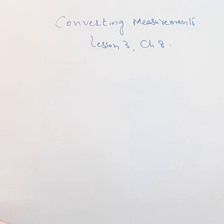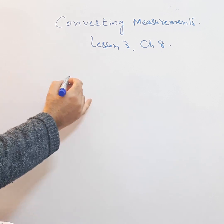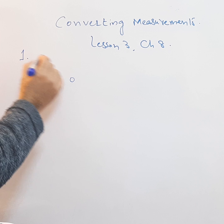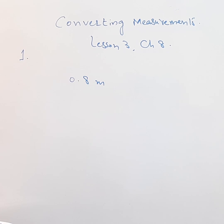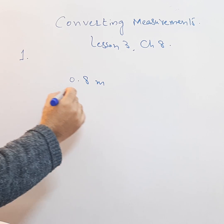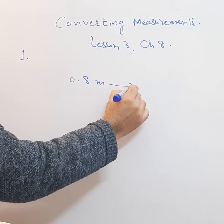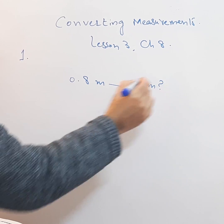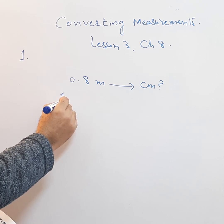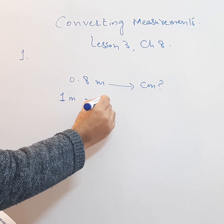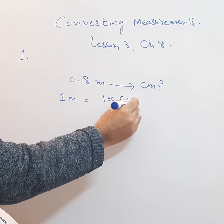How to convert. The first question is: the swimming pool is 0.8 meters deep. What is the depth of the pool in centimeters? We need to convert it into centimeters. We know that 1 meter is equal to 100 centimeters.